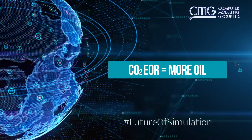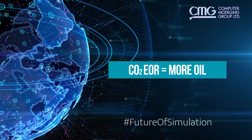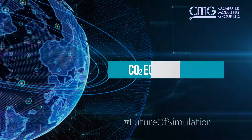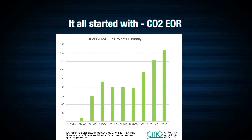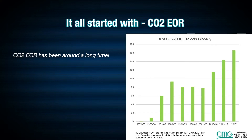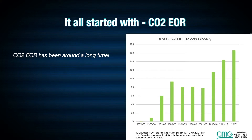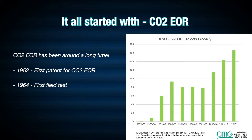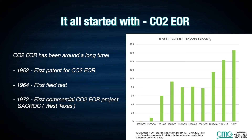Let's take a look at CO2. CO2 itself started on the basis that CO2 EOR was quite a useful process and it resulted in the production of more oil. This graph taken from the IEA shows the number of projects globally across time. It all started back in 1952 with the first patent for CO2 EOR, then in 1964 there was a first field test, and in 1972 we had the first commercial CO2 EOR project in West Texas.